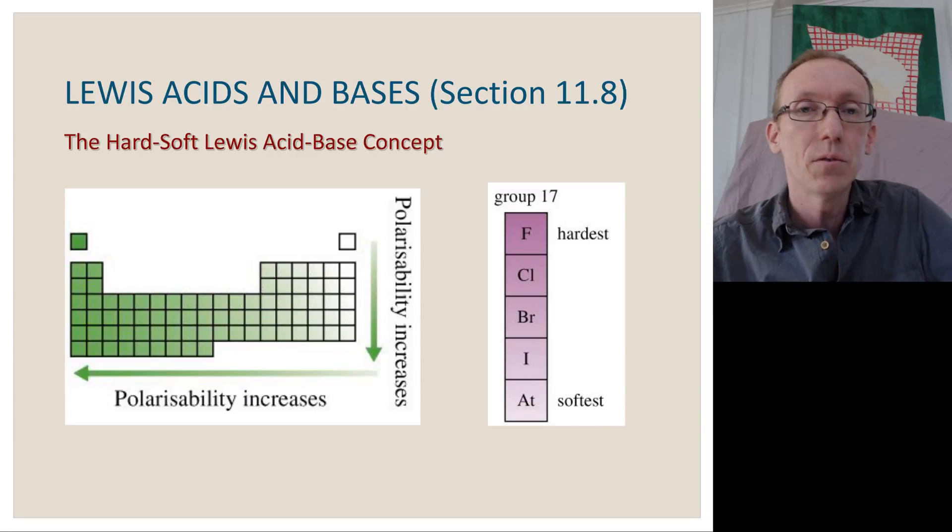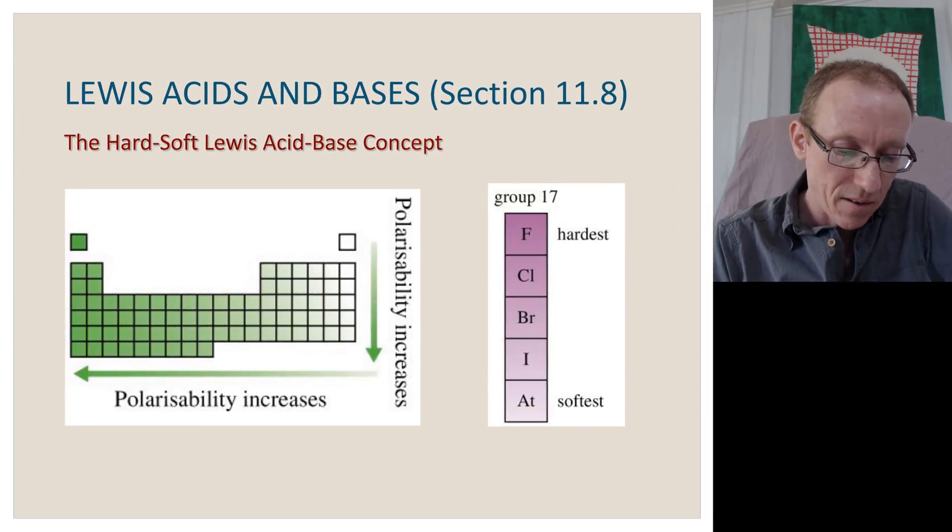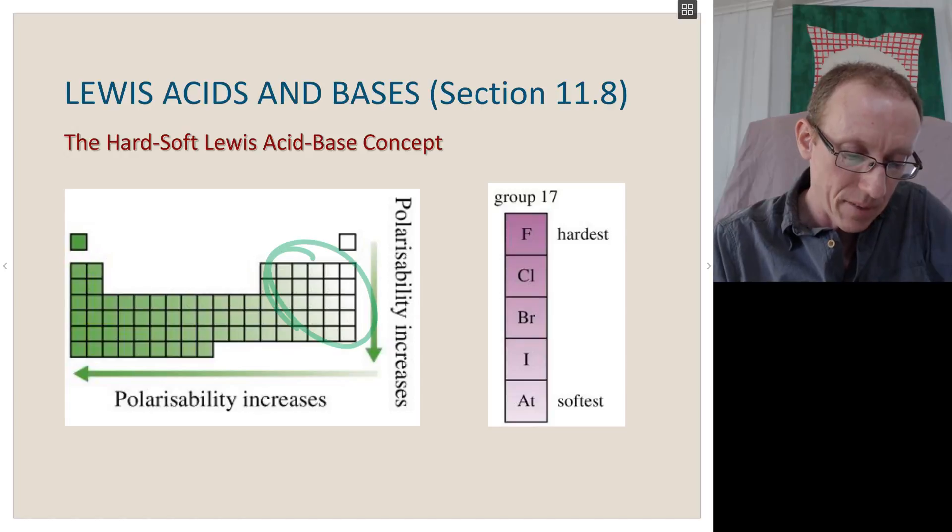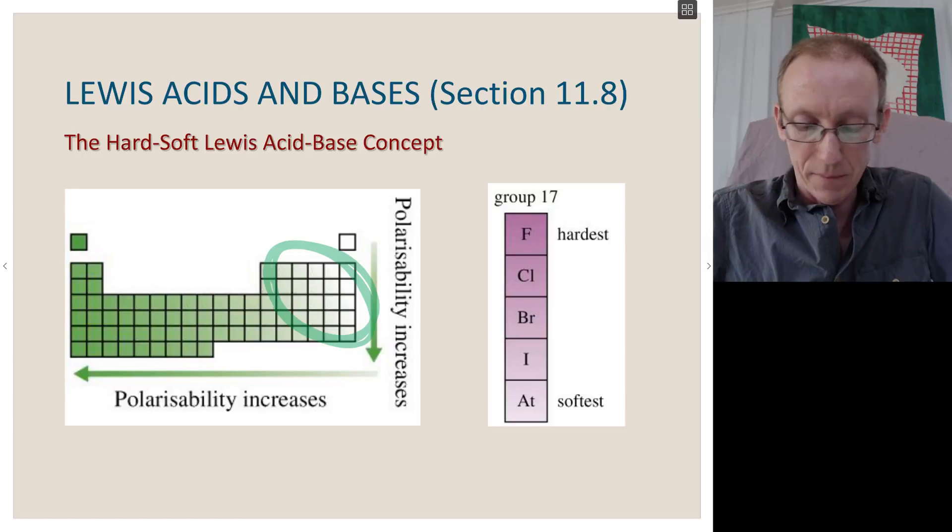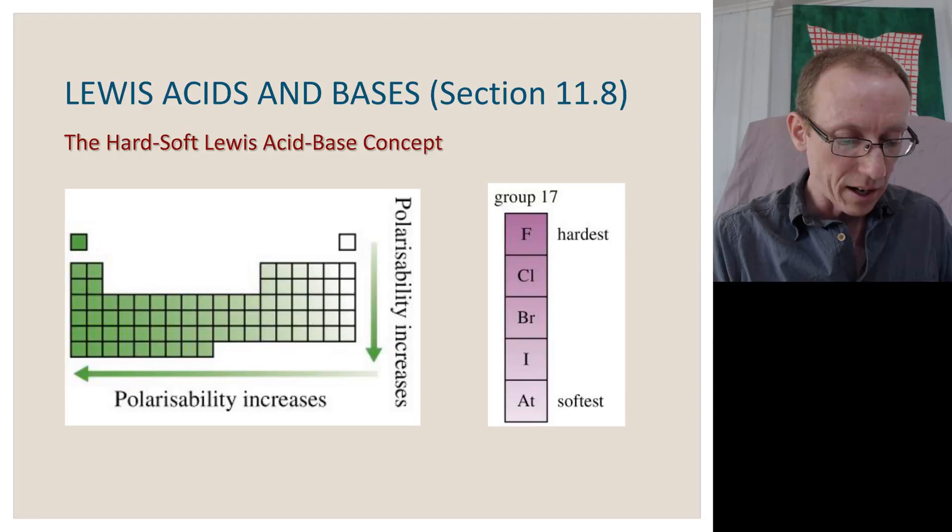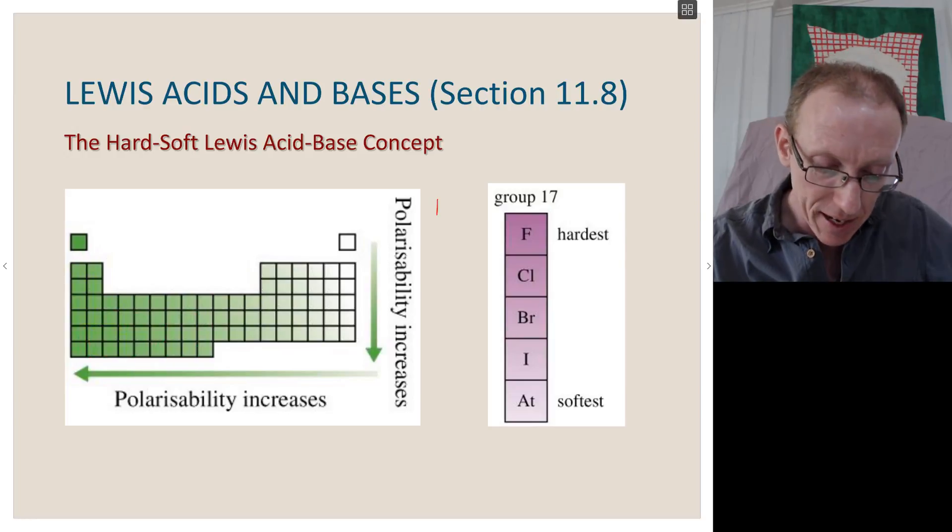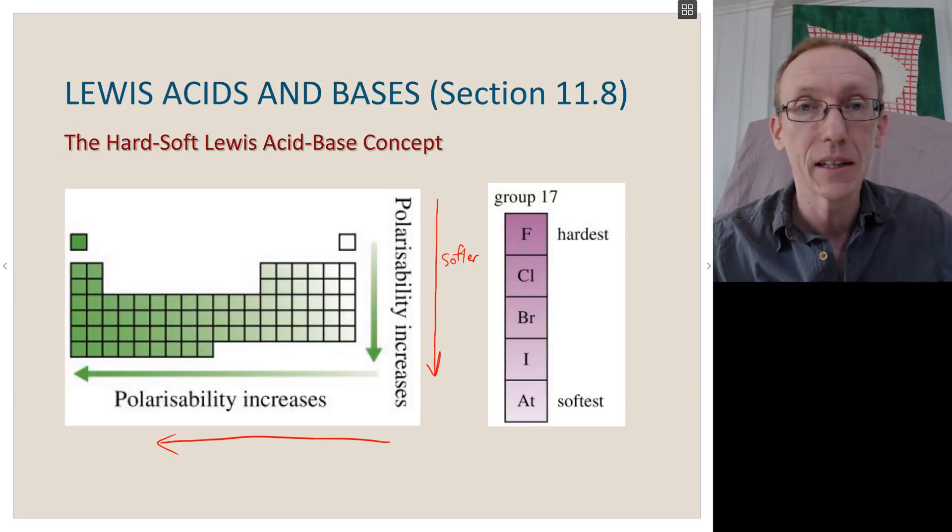So overall, the general trend is that hard Lewis acids tend to be up in this end of the periodic table, and hard Lewis bases tend to be in that part of the periodic table as well. Whereas the more polarizable elements are down in this region down here. So as we go down the periodic table, and as we go across to the left, in both these directions, we get to softer Lewis acids and Lewis bases.